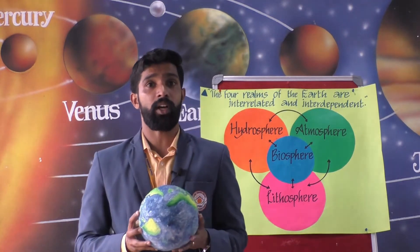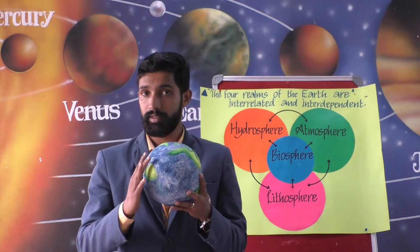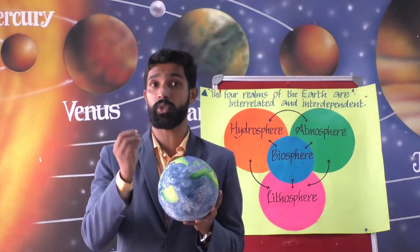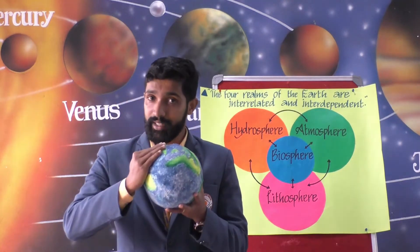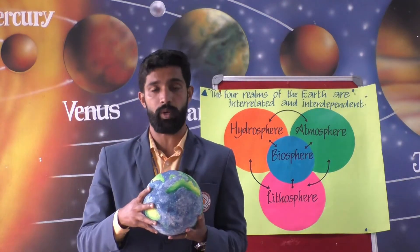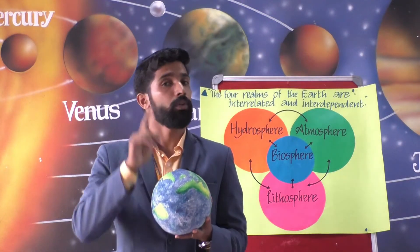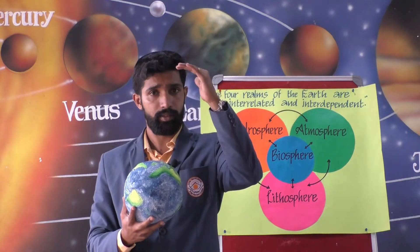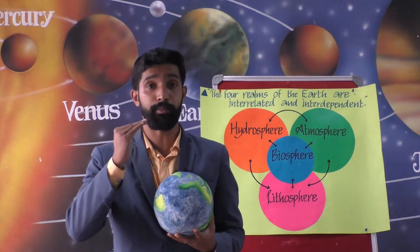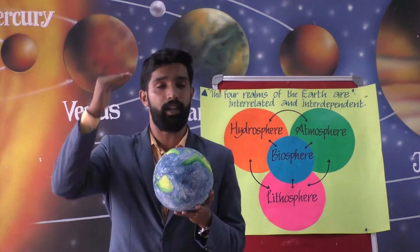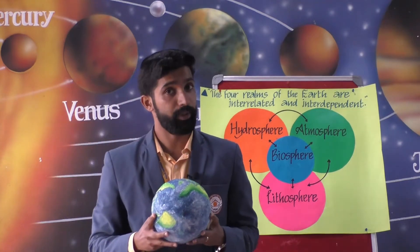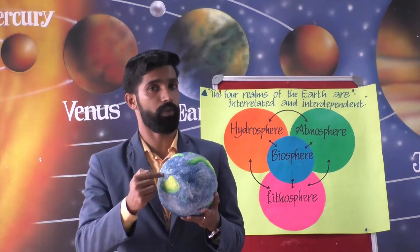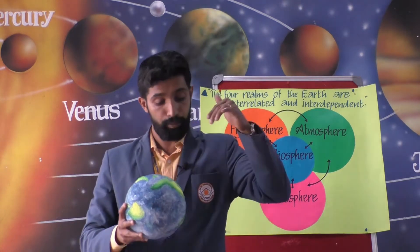All the oceans are connected with each other, so the level of seawater remains the same throughout the world. This level of seawater is known as sea level. The height or depth of any place on the lithosphere is measured from the sea level. For instance, Mount Everest, the highest point on the lithosphere, is 8,848 meters high above sea level. On the other hand, the Challenger Deep in the Mariana Trench, the deepest point on the lithosphere, is 11,033 meters below the sea level.